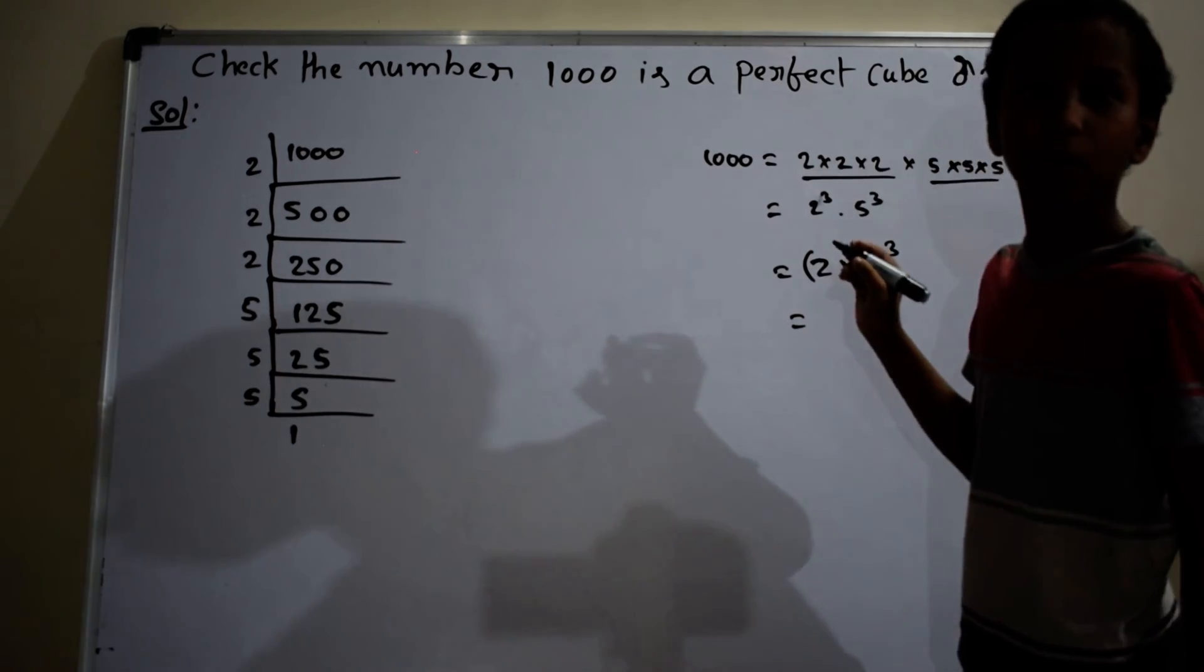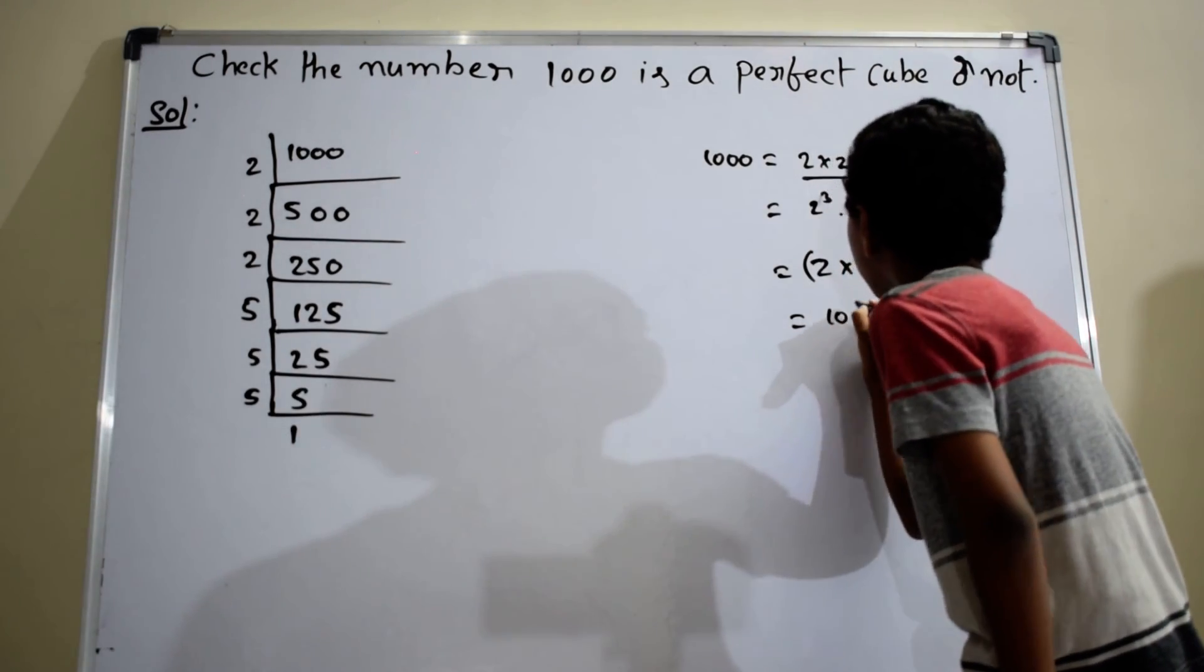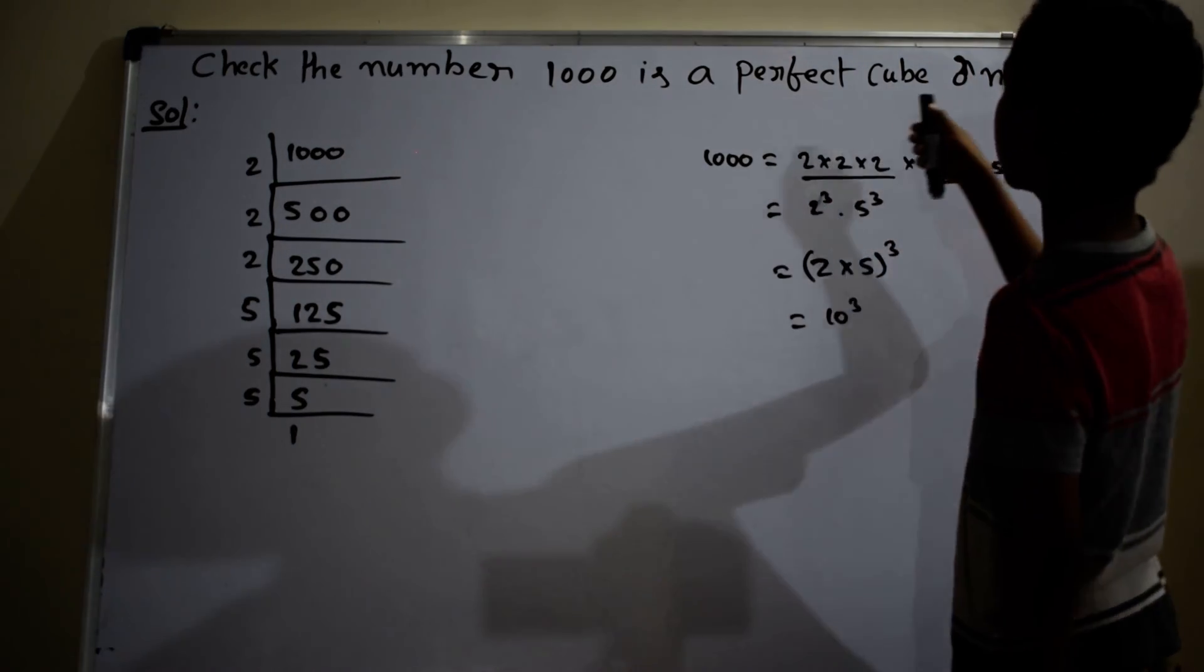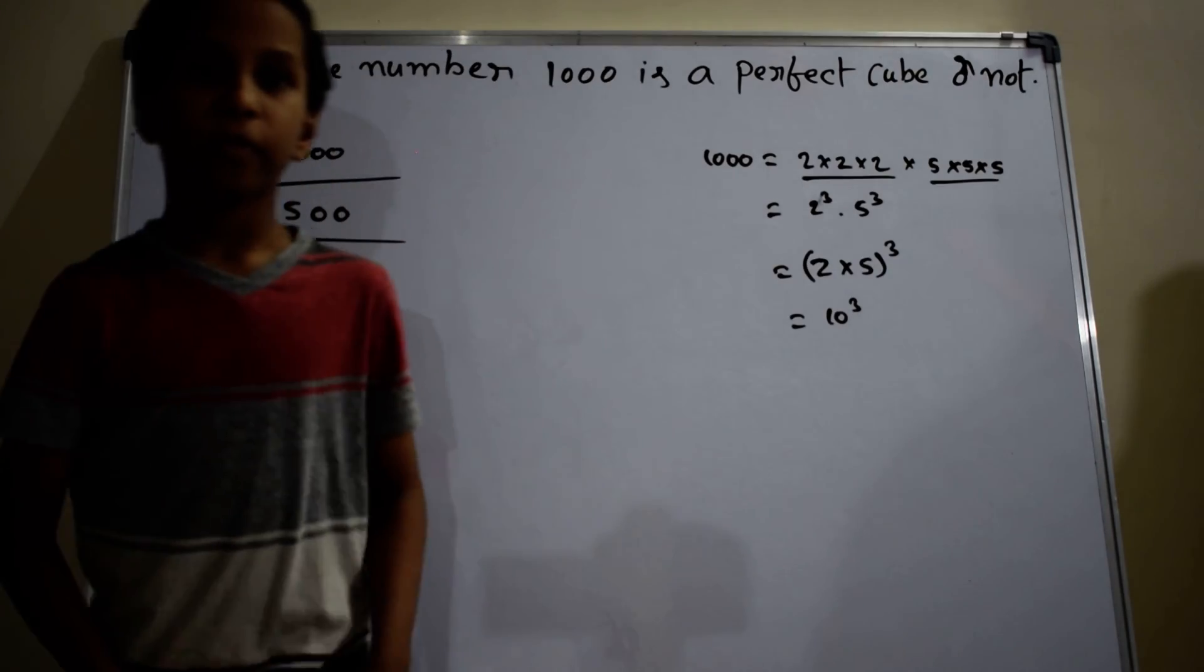Which equals 10 cube. Therefore 1000 is a perfect cube. Thanks for watching.